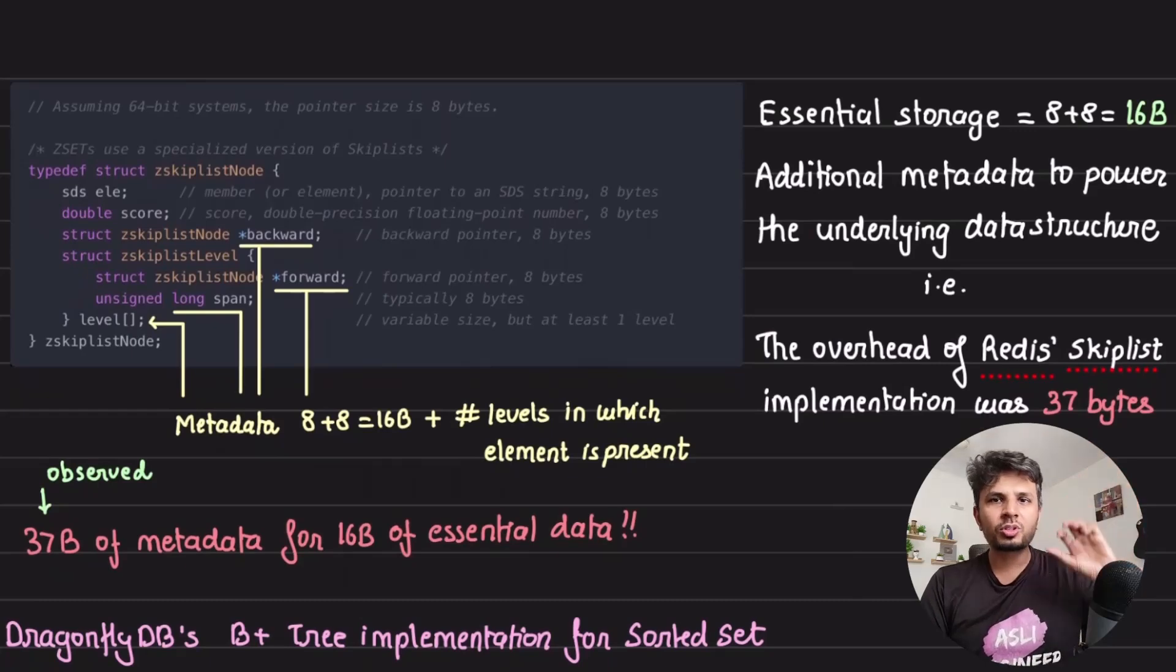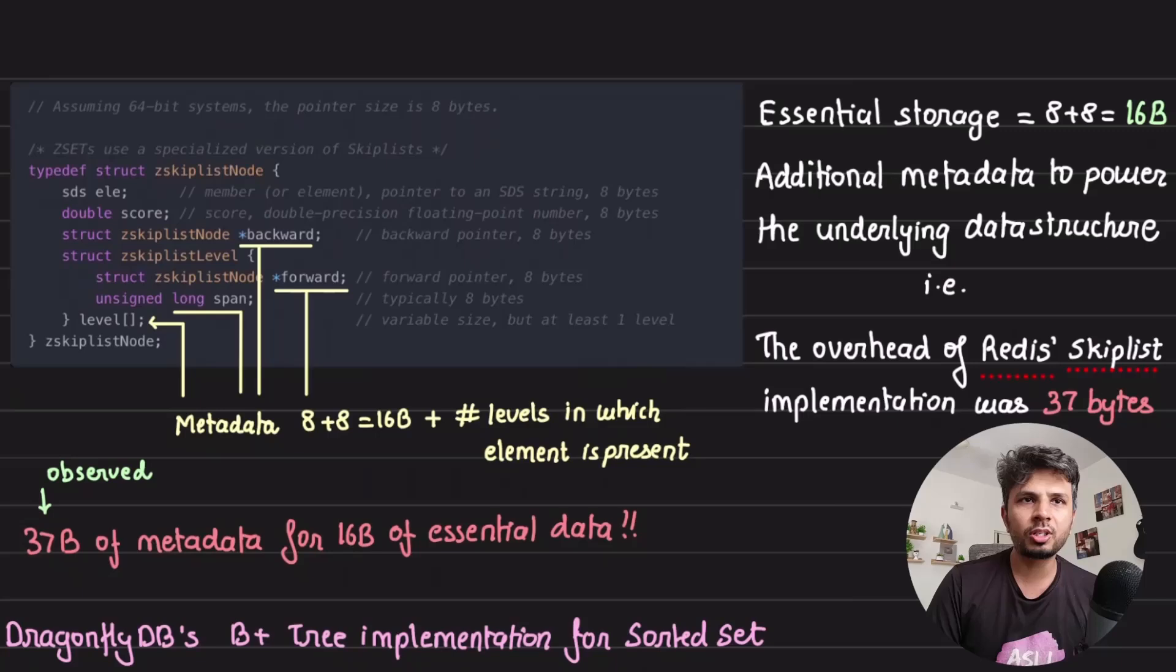Let's look at the source of Redis on how it implements skip list. This is the actual snippet from Redis source code. You have a z skip list node where each node has an element and a score. Element is 8 bytes, score is 8 bytes, so the bare minimum storage needed is 8 plus 8, which is 16 bytes. Anything on top of that is an overhead of the data structure being used.